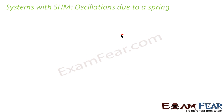Let us consider another system which exhibits simple harmonic motion — that is, oscillations due to a spring. Whenever you have an object attached to a spring, you tend to observe simple harmonic motion. Let us suppose there is a rigid support on the wall, you have a spring attached at one end to the wall, and on the other end there is a mass attached to it.